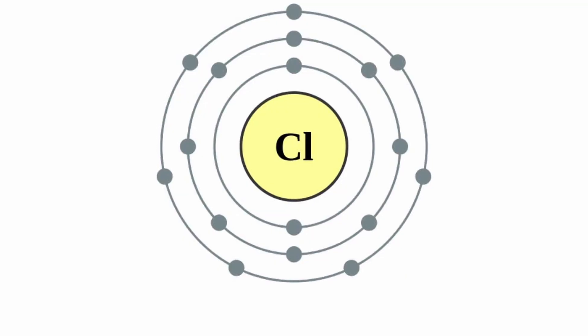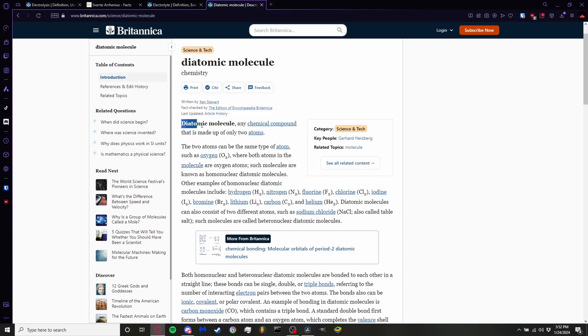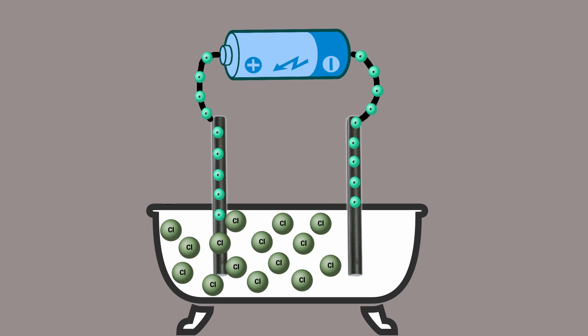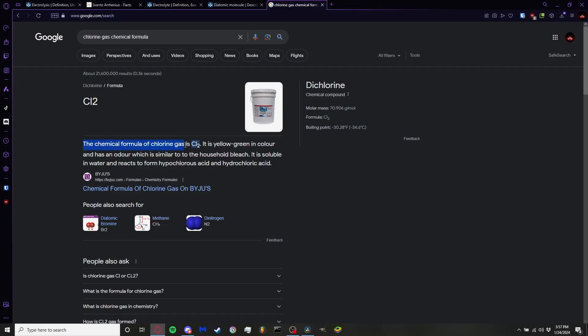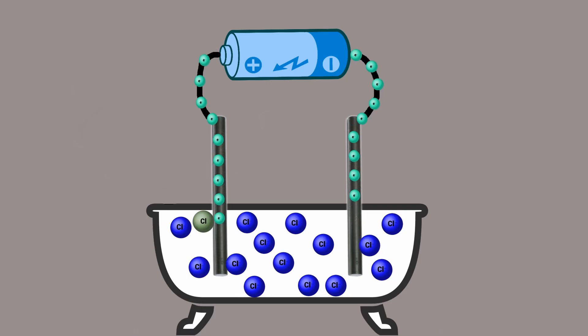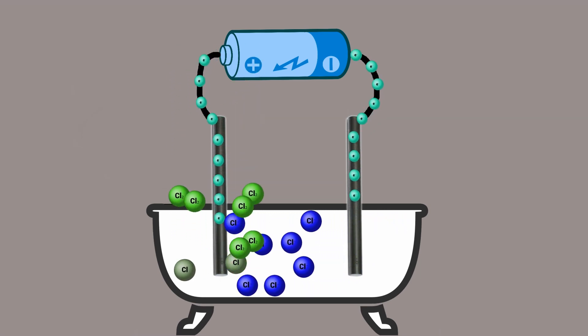But hold on, this is where it gets really interesting. Chlorine has another interesting characteristic - it's diatomic. This means it tends to bond with itself to form Cl2 when it can. Since all chlorine atoms are right next to each other in the tub, they hook up with each other. Cl2 is what we know as chlorine gas. Now there's a gas inside the lava tub that flows to the surface and bubbles out.